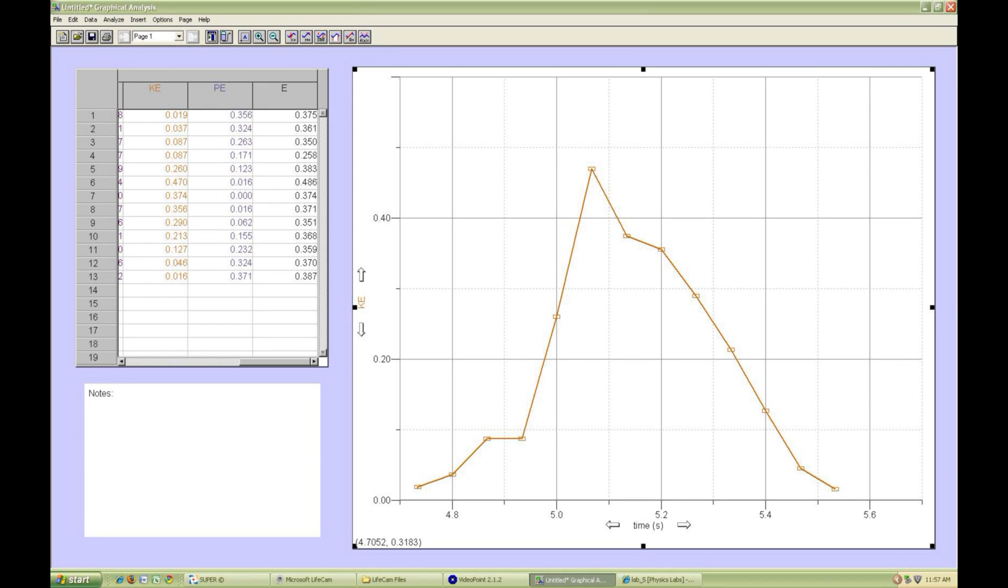Here's a plot of our kinetic energy per unit mass. The undesirable spike to the left of center is due to small errors in locating the center of the bob. Any errors in position become magnified when velocity is computed. Since the kinetic energy depends on the square of velocity, the small error becomes even more exaggerated.